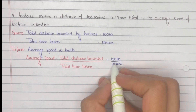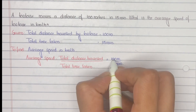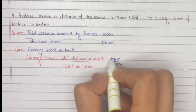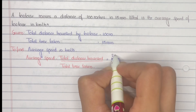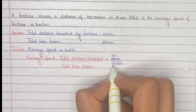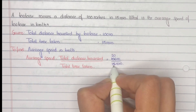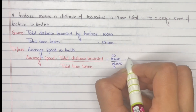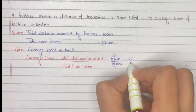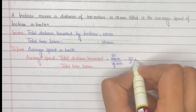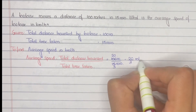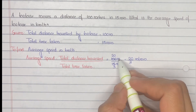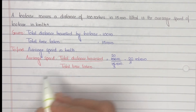Cancel the common terms. 5 is common: 100 divided by 5 is 20, and 15 divided by 5 is 3. This is equal to 20 by 3 meter per minute. The unit is meter per minute.